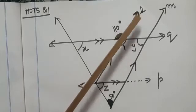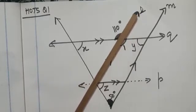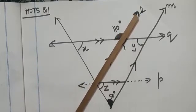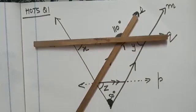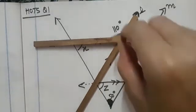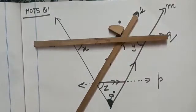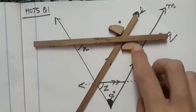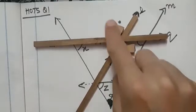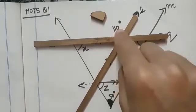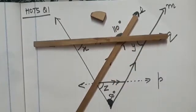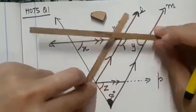First of all, I am considering two lines L and line Q. Line L and Q are intersecting lines, and when two lines intersect, four angles are formed and vertically opposite angles are equal. These are the two vertically opposite angles, so they will be equal. So one angle is given to be 110 degrees. So what will be the measurement of angle 1?